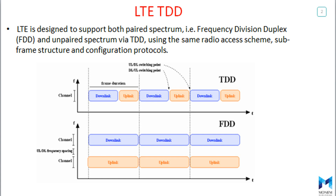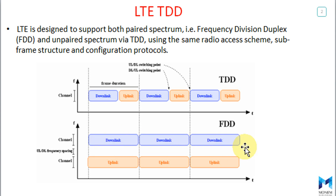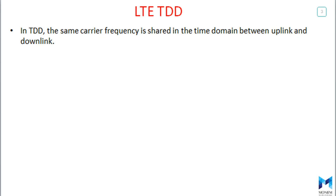Using the same radio access scheme and subframe structure and configuration protocols, as you can see in this figure. For TDD, the downlink and uplink share the same spectrum, but for FDD, downlink slots or subframes have a dedicated channel and uplink frames have another dedicated channel. For LTE TDD, the same carrier frequency is shared in the time domain between uplink and downlink.